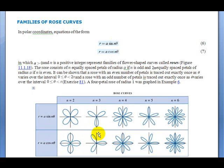And depending on whether n is even or odd, it's going to determine how many petals it has. For example, when we looked at cosine of 2θ, we ended up with 4 petals.